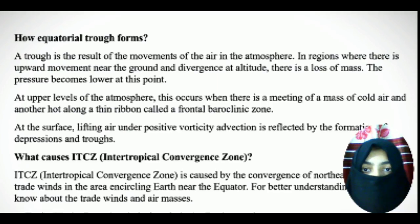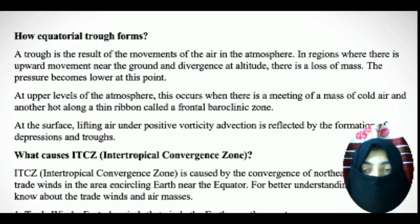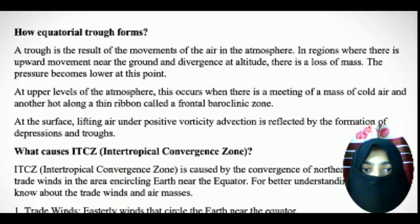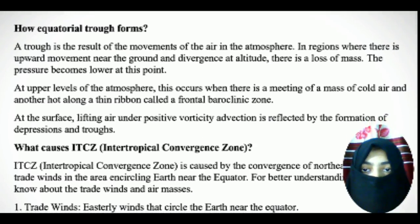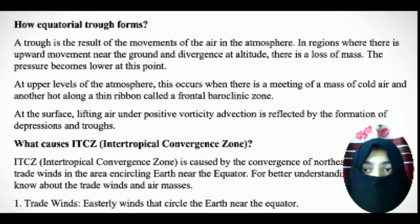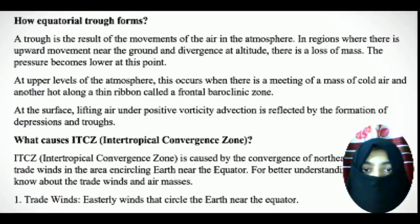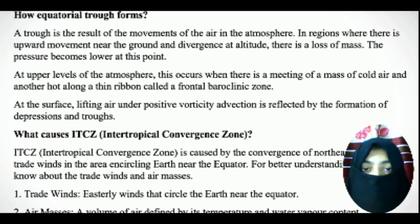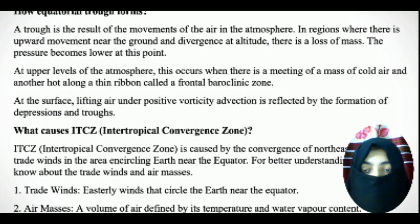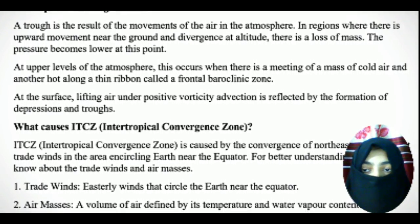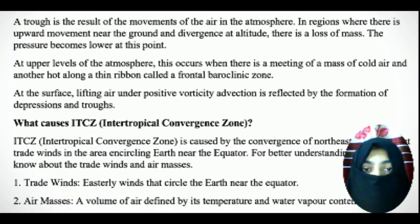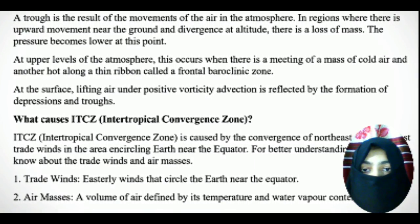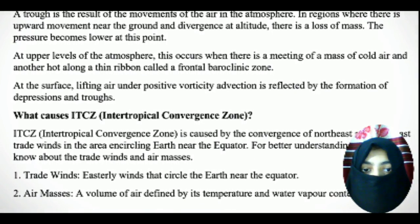How does the Equatorial Trough form? A trough is the result of movements of air in the atmosphere in regions where there is upward movement near the ground and divergence at altitude. There is a loss of mass, and the pressure becomes lower at this point. At upper levels of the atmosphere, this occurs when there is a meeting of a mass of cold air and another hot, thin ribbon called the Frontal Baroclinic Zone.